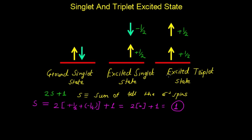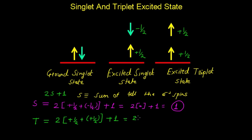Similarly, we can calculate it for the excited triplet state. Here S represents the sum of all electron spins, which is plus half and plus half, giving S equal to 1. So the multiplicity is 2 into 1 plus 1, which equals 3. This number 3 indicates that this is the triplet excited state.